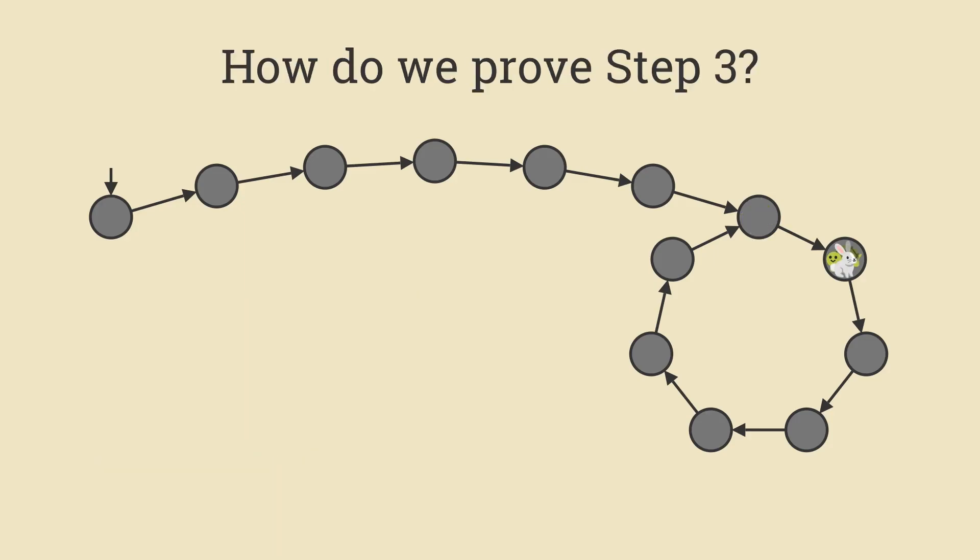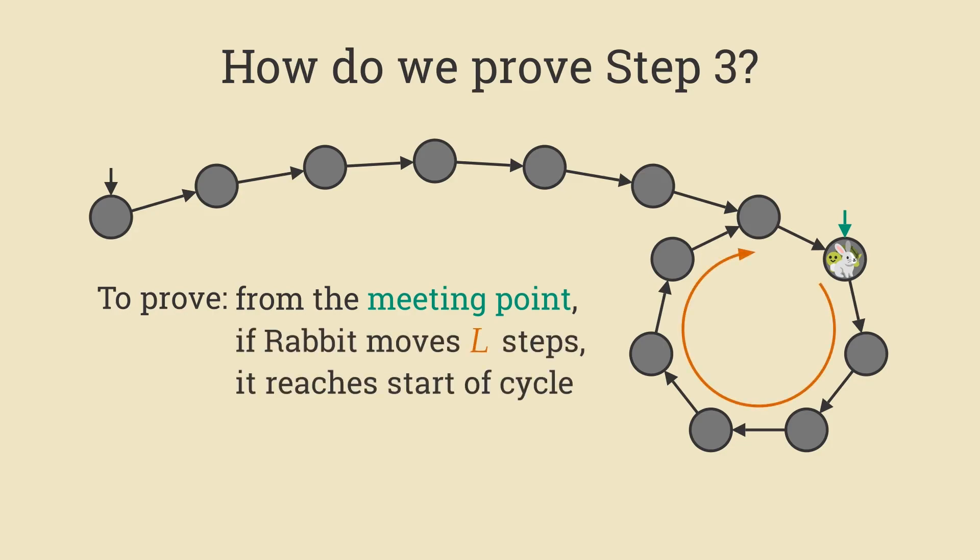Now of course this step needs proof, and since it might get potentially confusing later on, I just wanted to explicitly state what we need to show. From the meeting point, which is what I'm calling this particular node right here, if the rabbit moves L steps forwards, it reaches the start of the cycle.